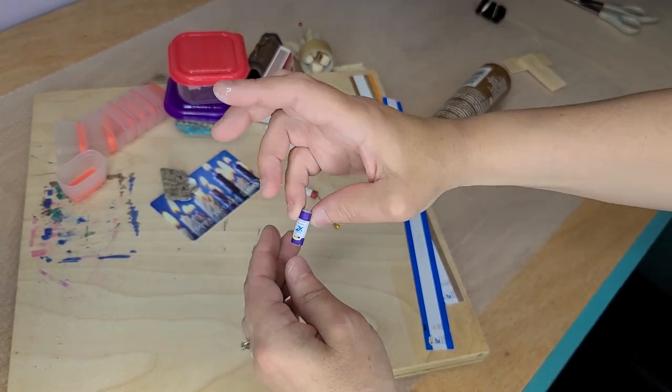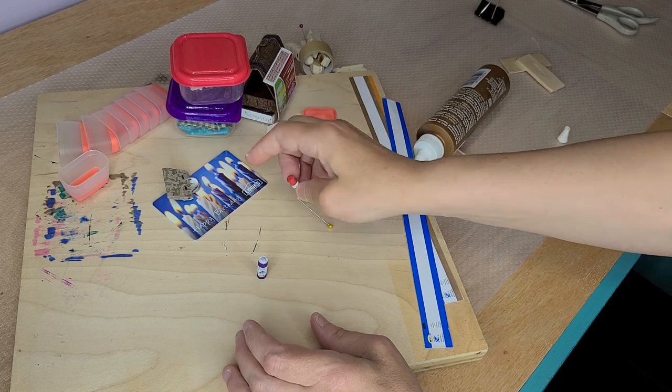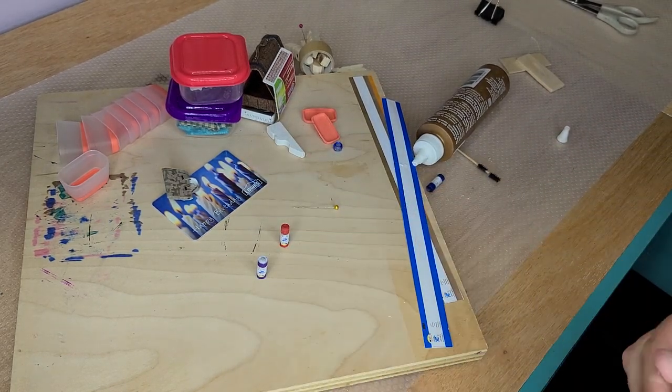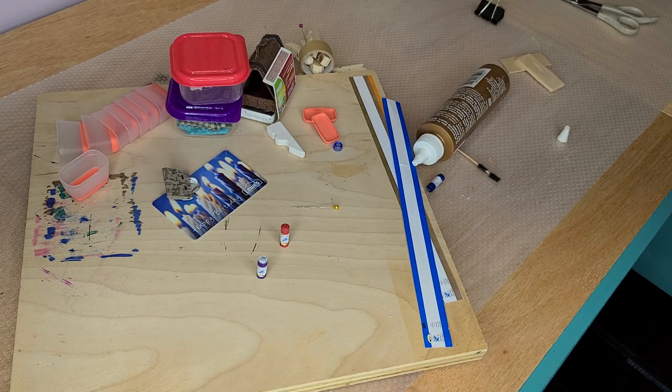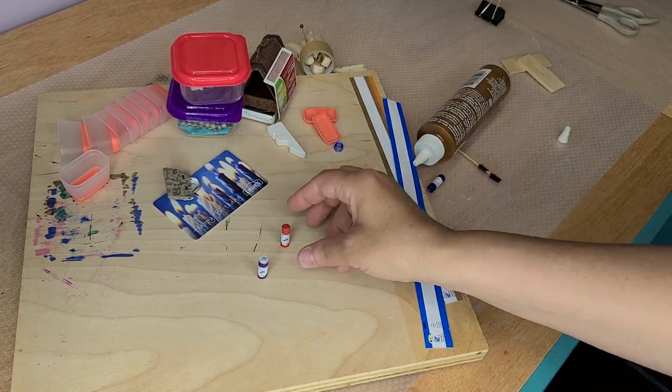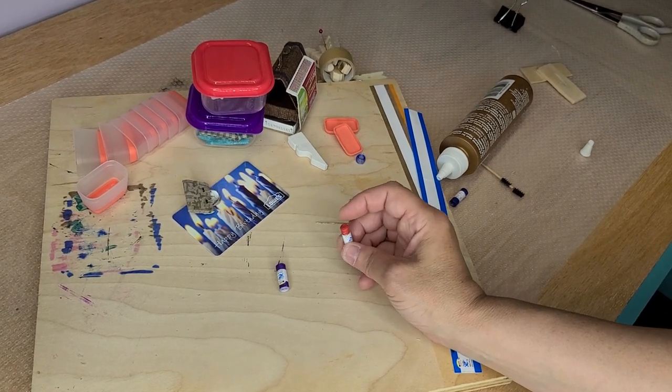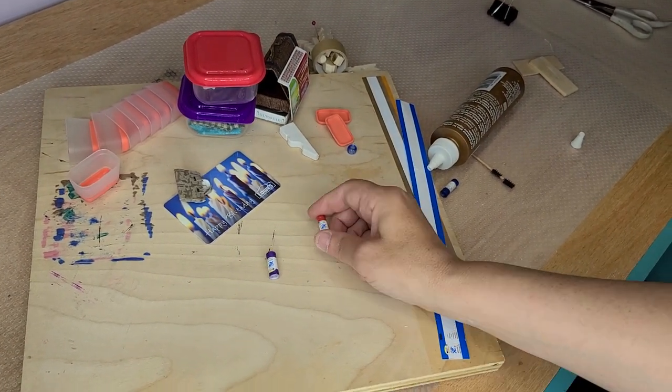Once it's completely smooth on top, you can sand any rough edges if you want and then just paint the top of it the color of your paint can. If you don't have the exact color, what you can do is take that color that you're using and blend it down into the lid and then you won't notice it.